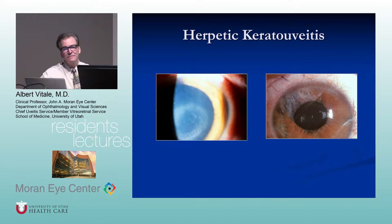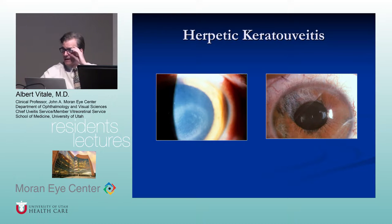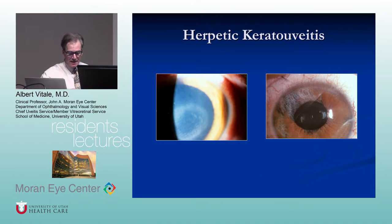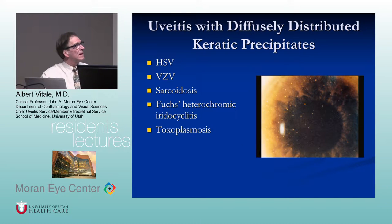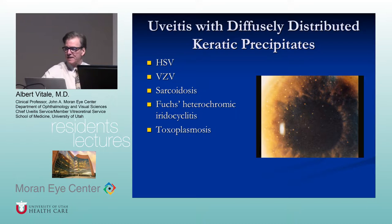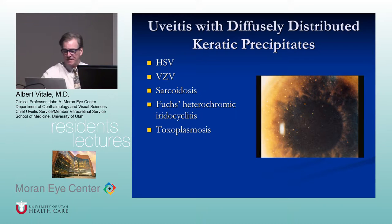It was classically taught that way, but it's not necessarily pathognomonic — it's usually due to ischemia of the iris. Clinically, uveitis with diffusely distributed keratic precipitates: think herpes, varicella, and also sarcoidosis, Fuchs heterochromic uveitis syndrome, and toxoplasmosis.